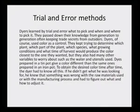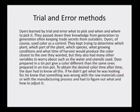Trial and error methods were the ones tried initially, although now there are standardized methods available. Dyers learnt by trial and error what to pick, when, and where to pick it. They passed down their knowledge from generation to generation, often keeping trade secrets from outsiders. Dyers used color as a control, trying to determine which plant, which part of the plant, which species, what growing conditions, and what time of harvest would produce the color closest to what they wanted. But they also had many other variables to worry about, such as water, utensils used, and so on.